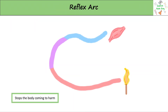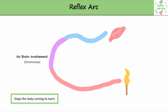The brain also has a reflex arc to stop the body from coming to harm. If the receptors on your body notice something dangerous, for example your skin touching a flame, instead of being directly sent to the brain, the impulse curves round in an arc and goes straight to the muscle to make the body pull away to stop it coming to harm. This reflex arc means there is no brain involvement, so it is an unconscious process meaning it is much quicker than having to think about the response.